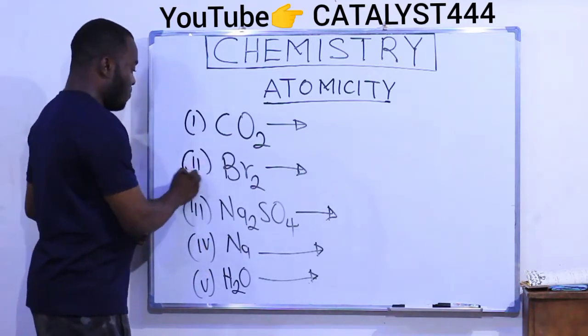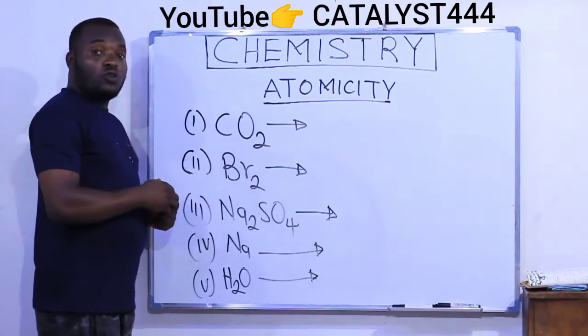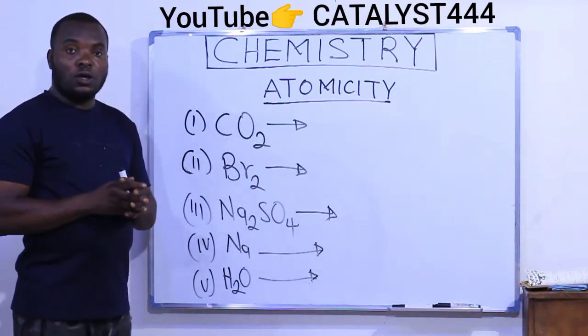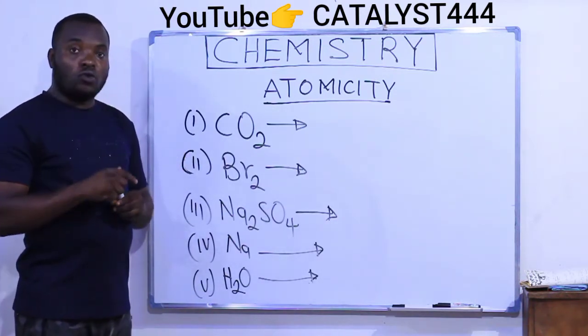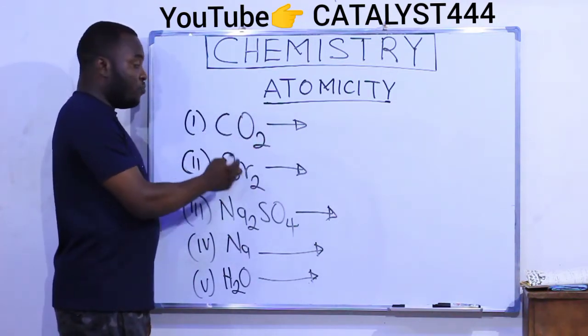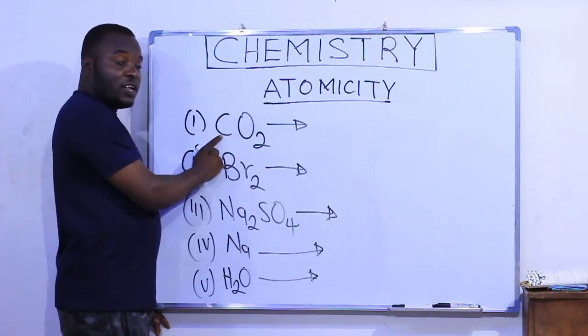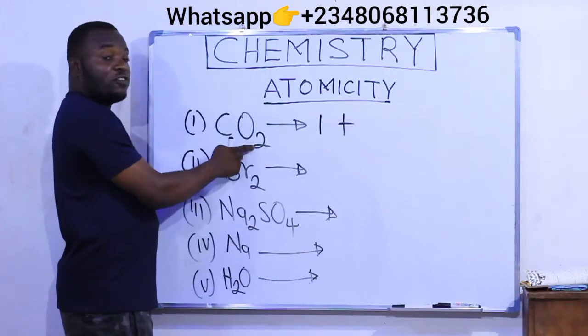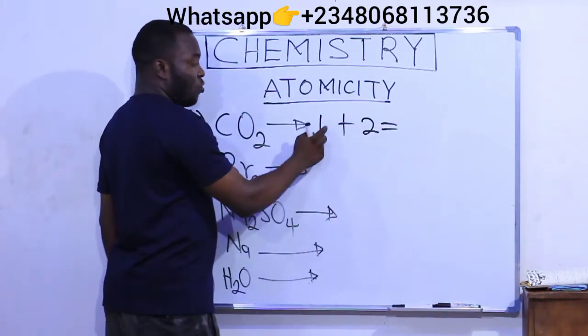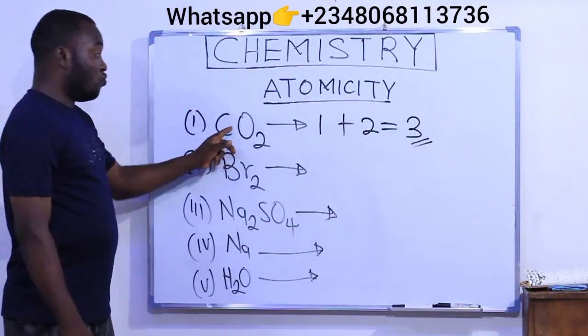The first one here is CO2. The atomicity of CO2 is the total number of atoms contained in CO2, which makes up one molecule of CO2. And here is a molecule of CO2. What can you see here? CO2 contains carbon and oxygen. How many carbons are there? One. How many oxygens are there? Two. So total number of atoms in CO2 is one plus two, which gives us three. So the atomicity of CO2 is three.